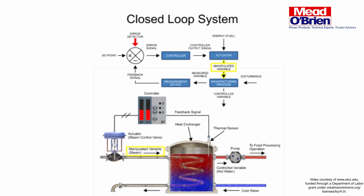The amount of energy, or steam in this example, altered by the actuator, is the manipulated variable. Manufacturing process is the operation of the heat exchanger to control the physical variable.